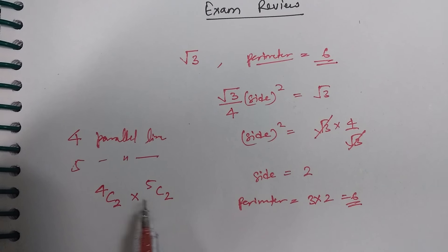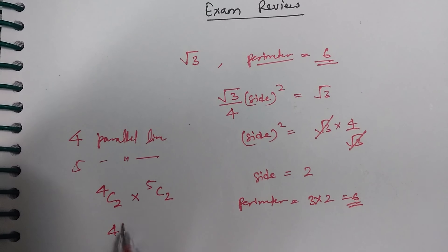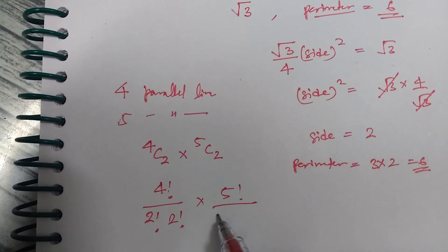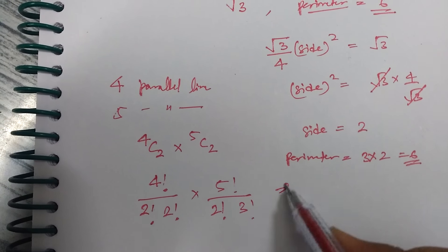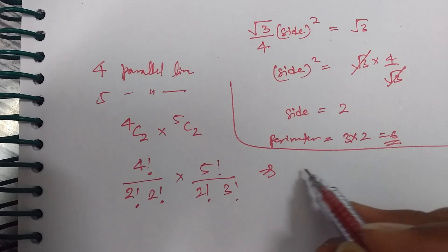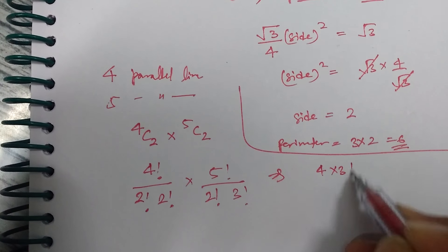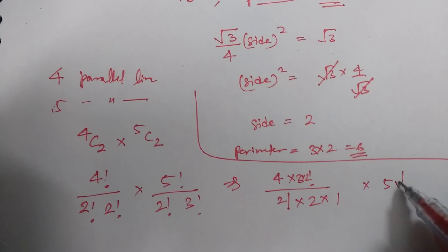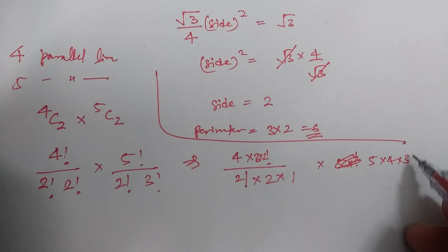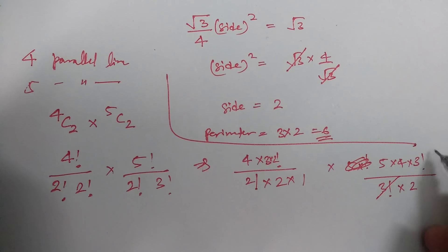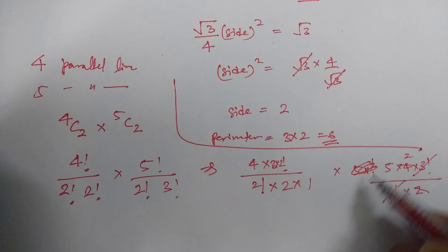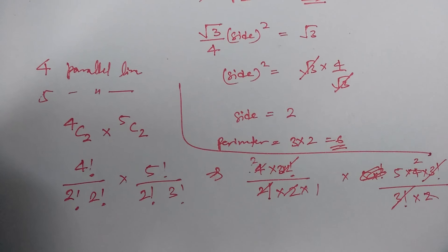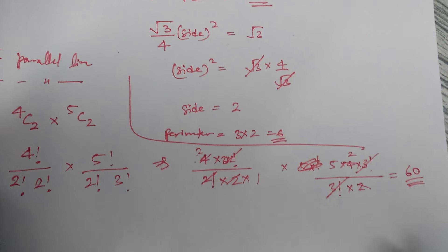And it was like if you would have got 4 factorial upon 2 factorial into 2 factorial into 5 factorial upon 2 factorial into 3 factorial. So it will be 4 into 3 into 2 into 2 factorial upon 2 factorial into 2 into 1 into 5 into 4 into 3 factorial upon 3 factorial into 2. So 5 to 10 and it would have given you 3 to 6, so 10 into 6 equals to 60. So 60 was the correct answer for that question.